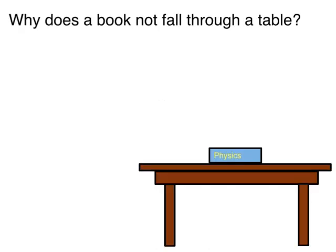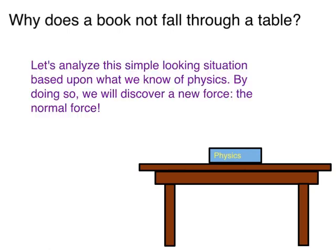In essence, this video deals with the question: I set a book on a table — why doesn't it fall through it? There's a force of gravity down, so what keeps the book from just falling through the table? Let's analyze this rather seemingly simple situation based upon what we know of physics thus far. It turns out that by doing so, we're going to discover an entirely new force: the normal force.